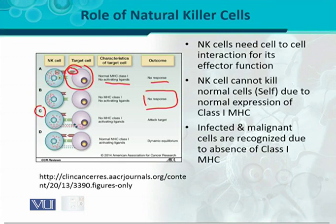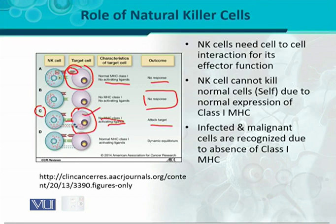In case C, you can see that the natural killer cells have certain receptors, and on the infected cells, MHC is now absent — shown in pink color. But there are activating ligands shown in green color, giving the message that the cell needs to be targeted. So the natural killer cells recognize these cells and kill them. The absence of class 1 MHC indicates the cell has been transformed.